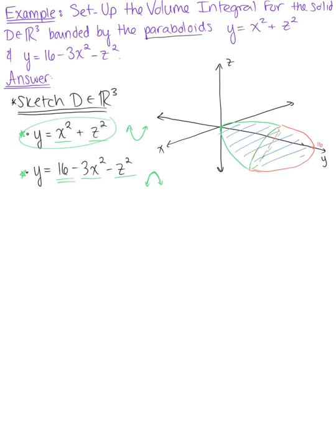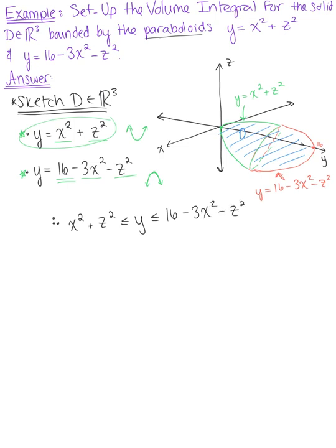This is our solid region D that we will be integrating over. Using our sketch, we can define the y-bounds. The lower bound is the paraboloid y equals x squared plus z squared, and the upper bounding paraboloid is y equals 16 minus 3x squared minus z squared. Therefore, x squared plus z squared ≤ y ≤ 16 minus 3x squared minus z squared.